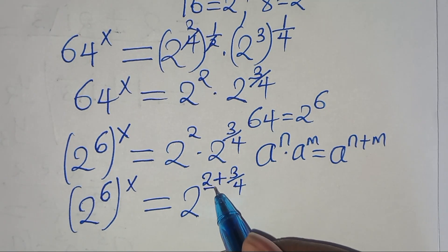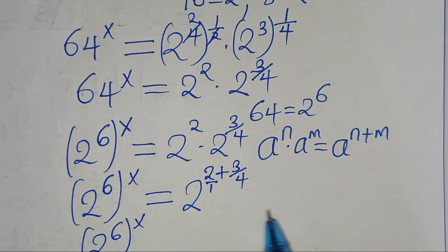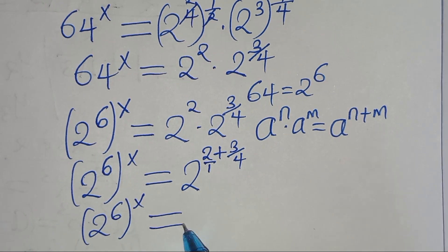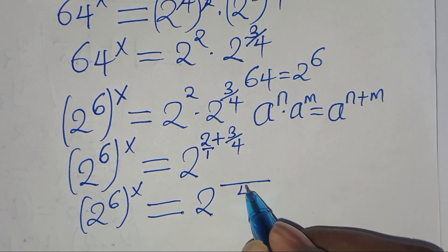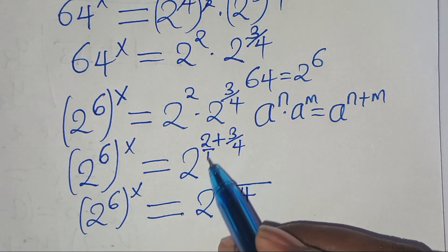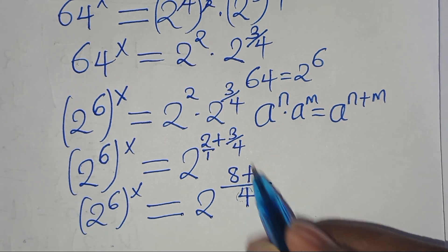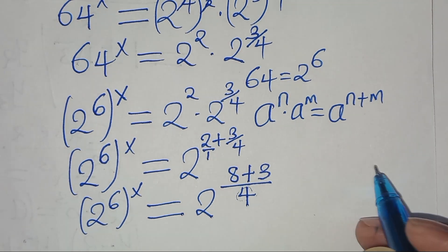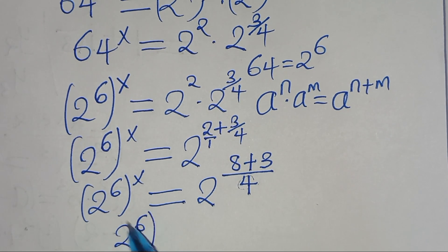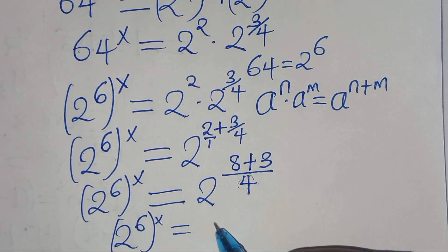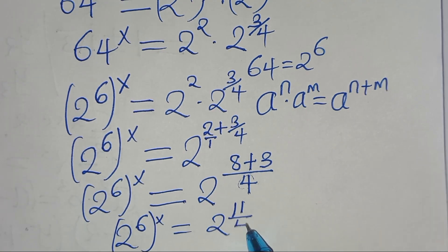Remember 2 is a whole number, so this is over 1. So we have 2 to the power of 6, raised to the power of x, this is equal to — the LCM here is 4 — so 4 divided by 1 is 4 times 2, this is 8, then plus 4 divided by 4 is 1 times 3, this is 3. So we have 2 to the power of 6 raised to the power of x, this is equal to 2 raised to the power of 8 plus 3, which is 11 over 4.